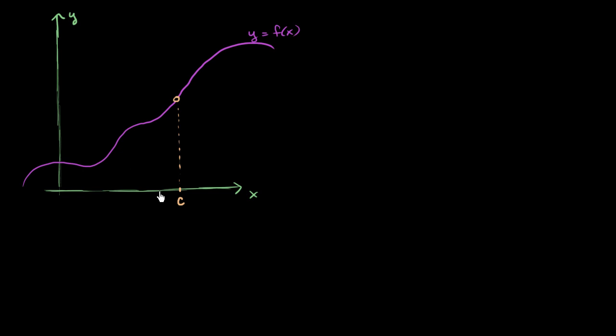When x is a reasonable bit lower than c, f of x for our function that we just drew is right over here. That's what f of x is going to be equal to, y equals f of x. When x gets a little bit closer, then our f of x is right over there. When x gets even closer, maybe really almost at c but not quite at c, then our f of x is right over here.